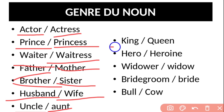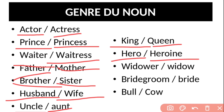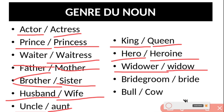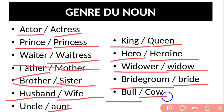Suite des paires masculin/féminin : king (le roi) / queen (la reine) ; hero (un héros) / heroine (une héroïne) ; widower (un veuf) / widow (une veuve) ; bridegroom (le marié) / bride (la mariée) ; bull (le taureau) / cow (la vache).